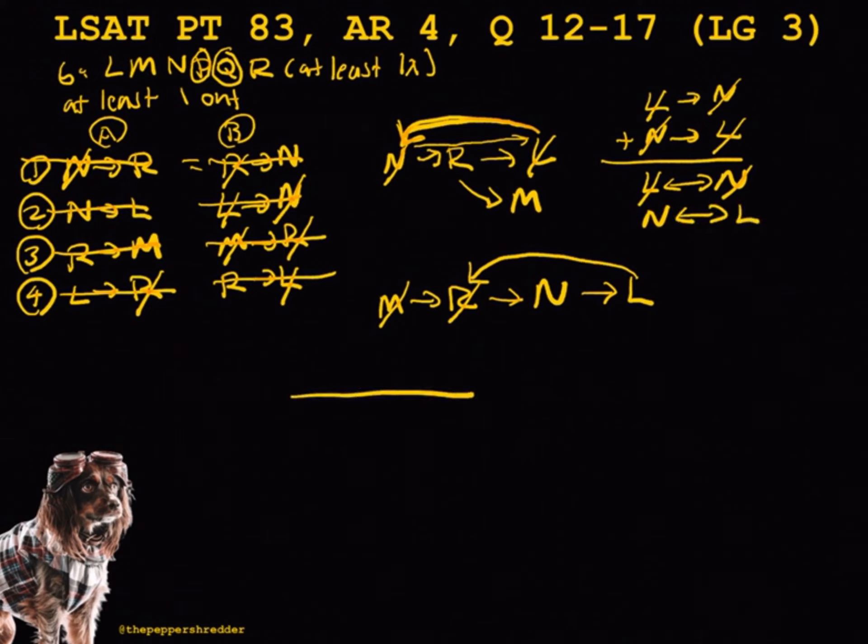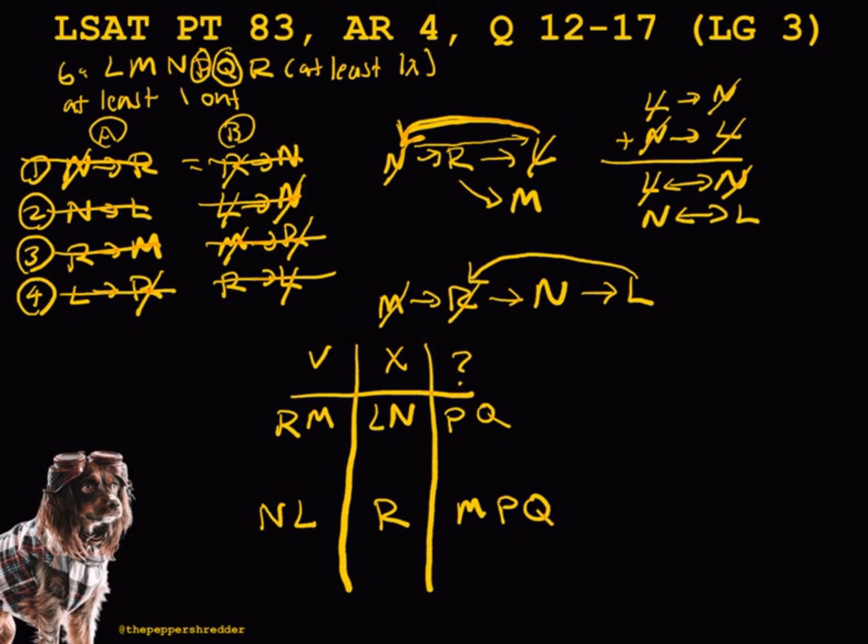Next, we can draw a table to further show our in and out groups. In the first instance, if R is in, M must be in, and L must be out, and N must be out. This leaves P and Q left to be placed. In the second instance, if N is in, then L is also in, and R must be out. This leaves M, P, and Q left to be placed. Now we are ready to answer the questions.